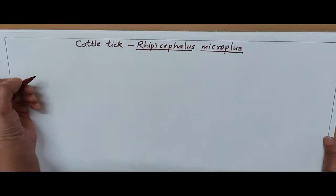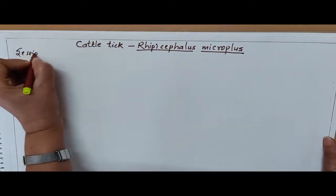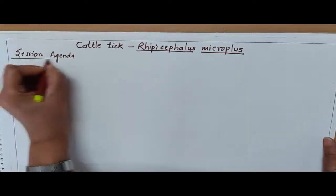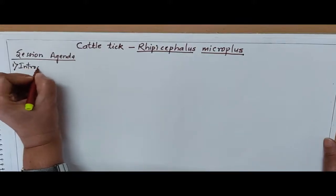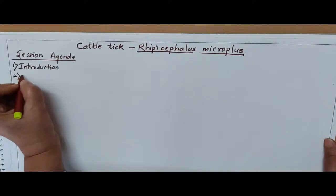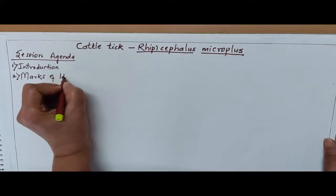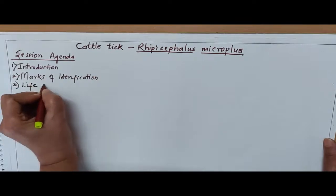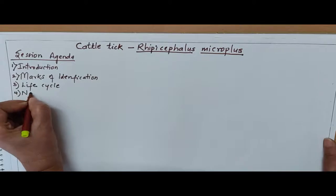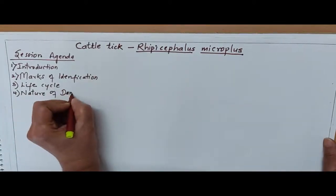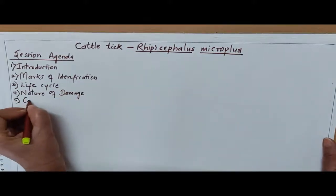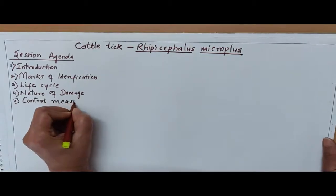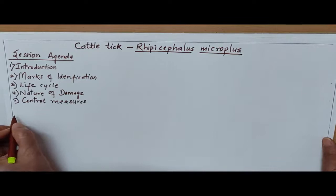Today I am going to discuss about cattle tick, Rhipicephalus microplus. We will be covering the following points in today's session. First, Introduction, Marks of Identification, Life Cycle, Nature of Damage, and Control Measures.